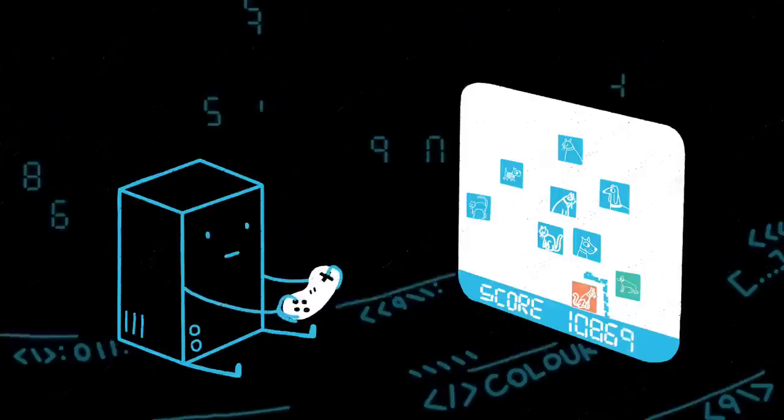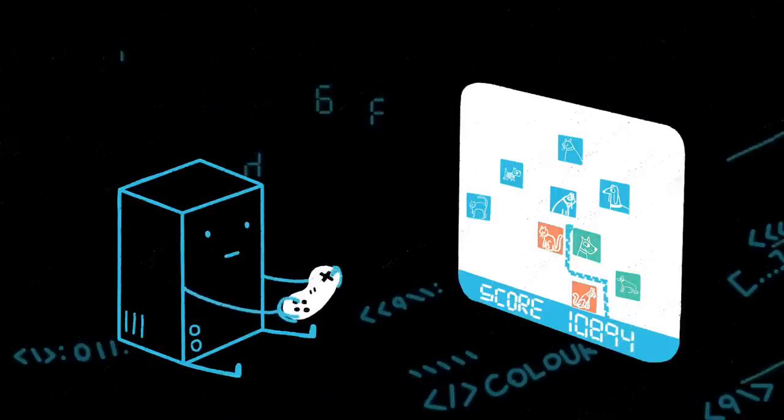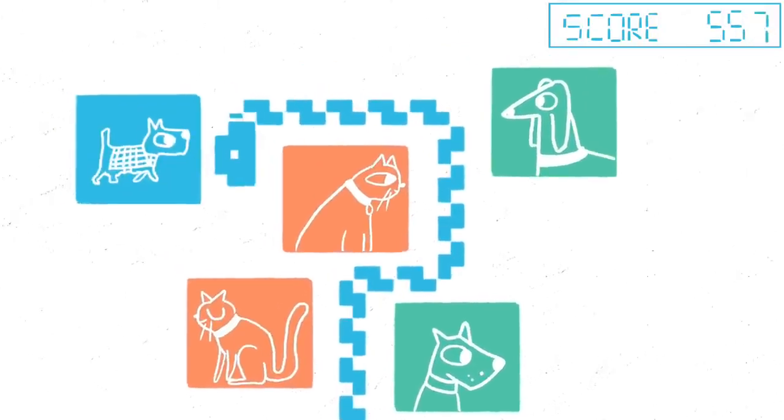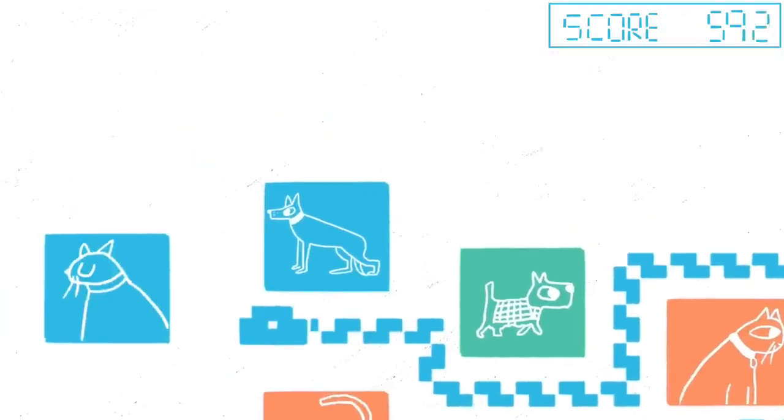One example of a simple, yet highly effective algorithm is to find the optimal line separating cats from dogs. When the computer sees a new picture, it checks which side of the line it falls on and then says either cat or dog.